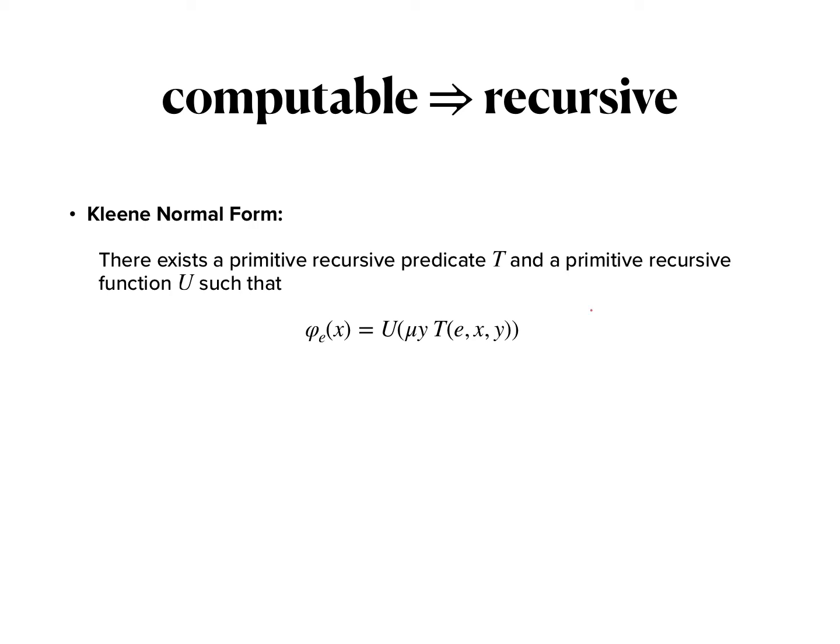So this in particular shows that one application of the μ-operator is enough to get all Turing computable functions from the primitive recursive functions.